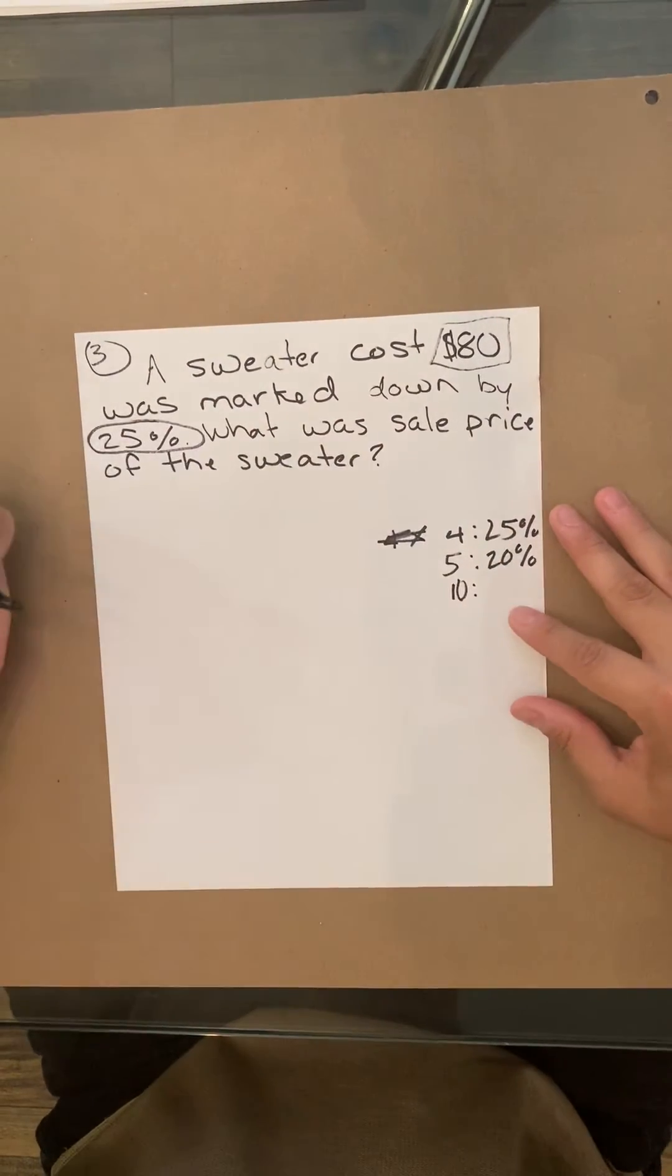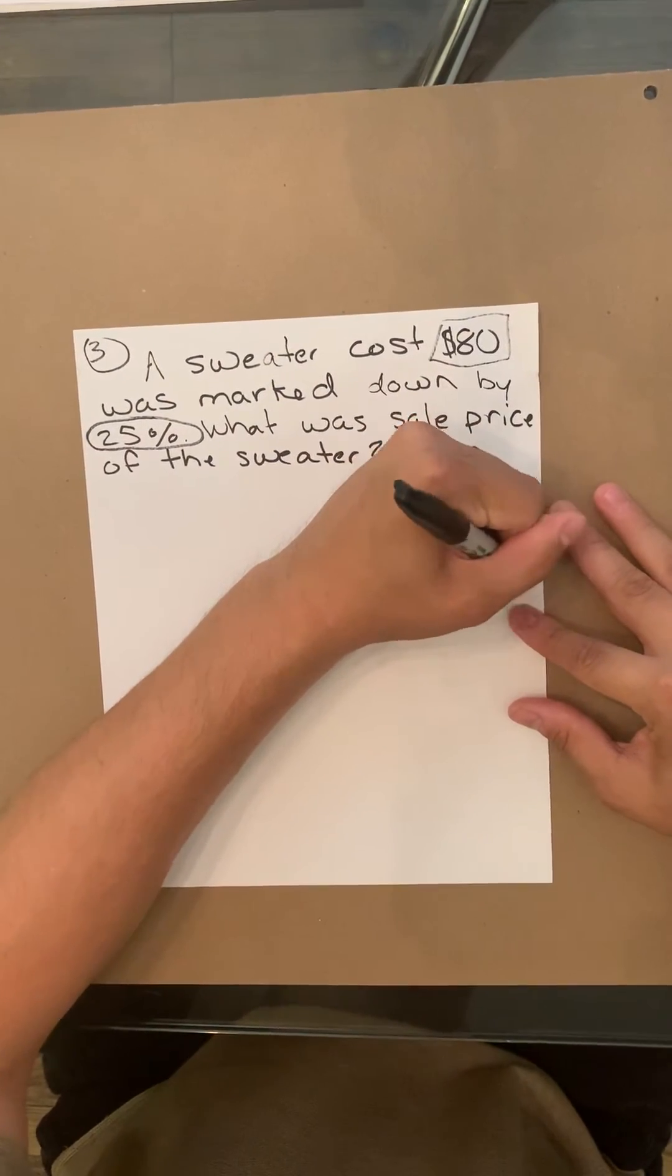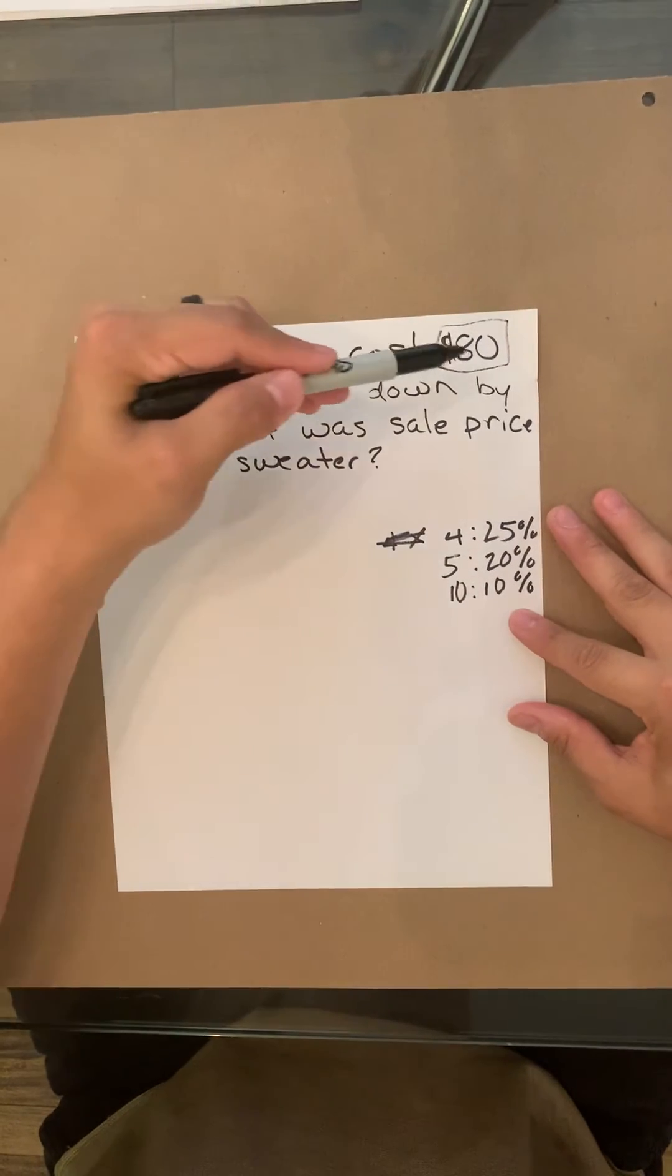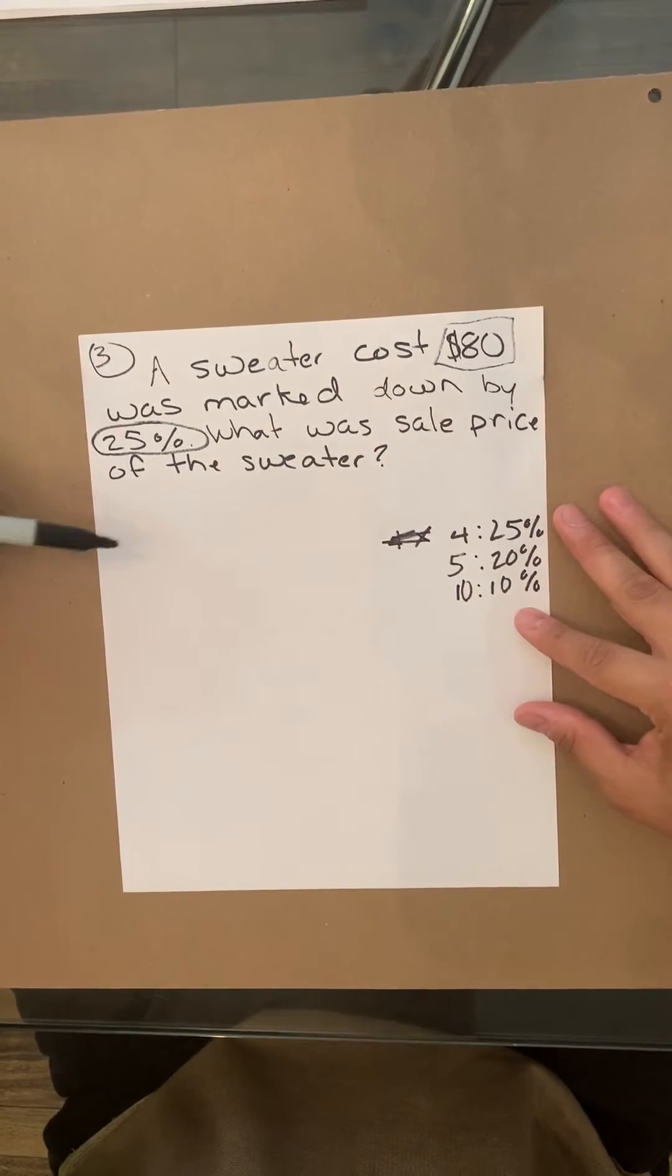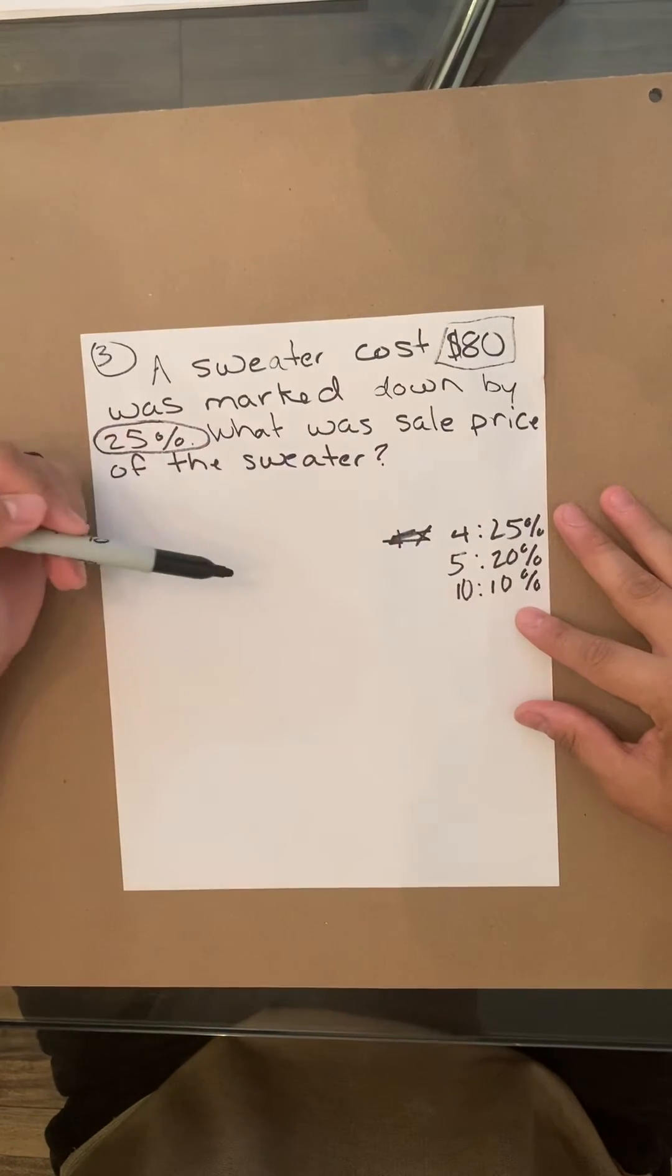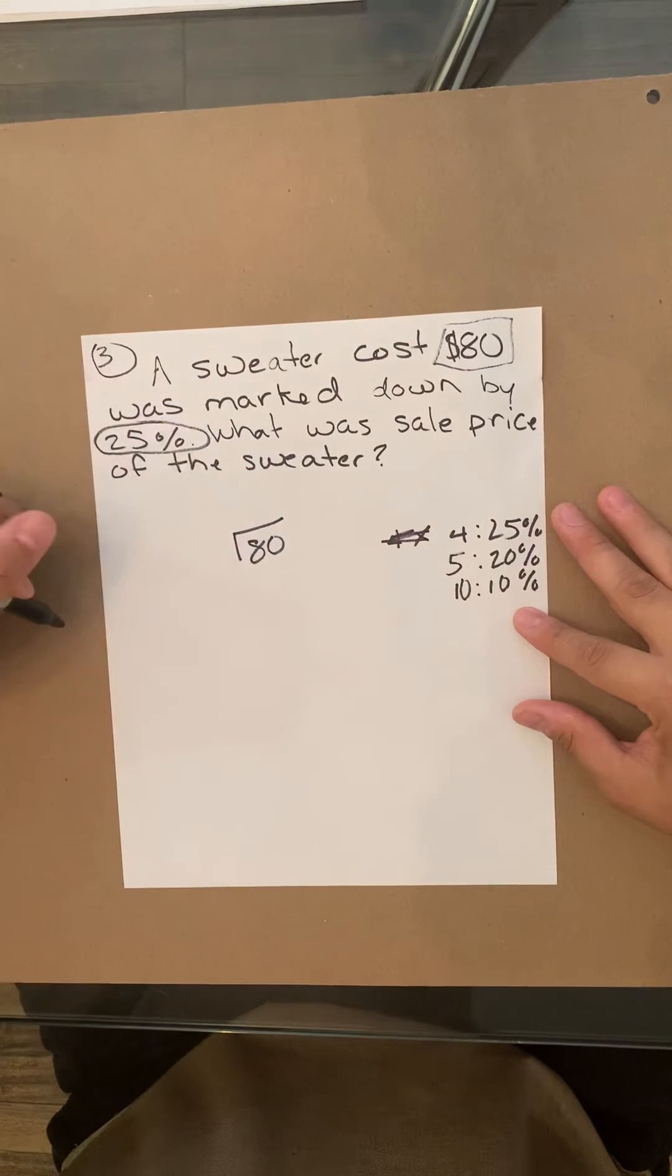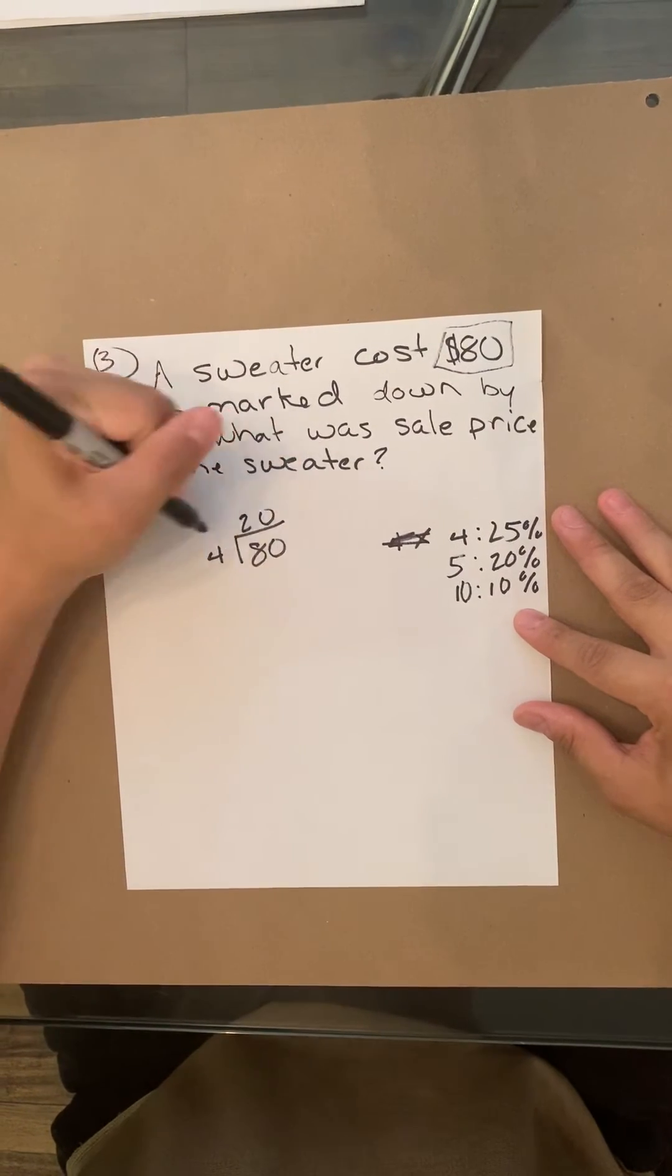So the question is: a sweater cost $80 and it was marked down by 25%. Well, I know 25%. I'm going to take the 80 and divide it by four. Once I divide it by four, that'll equal